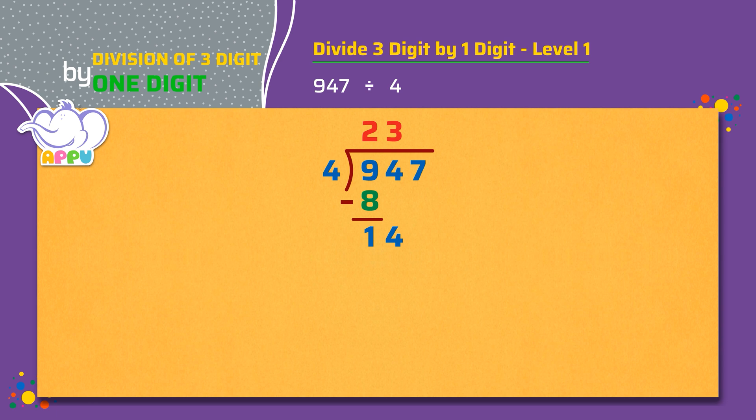We multiply 4 and 3, we get 12. We subtract 12 from 14, we get 2.